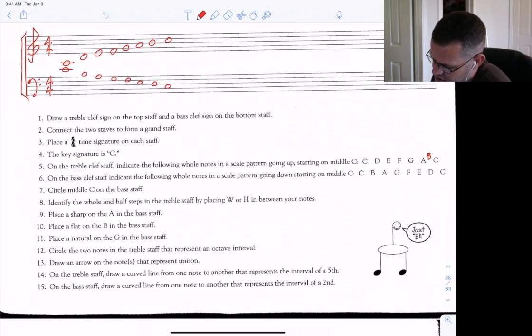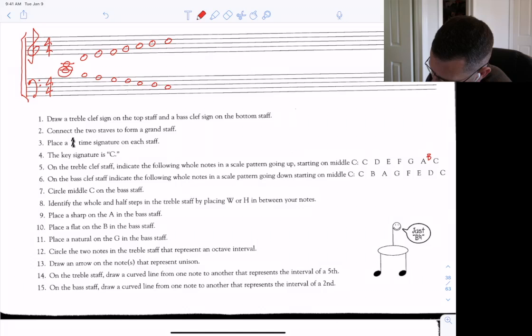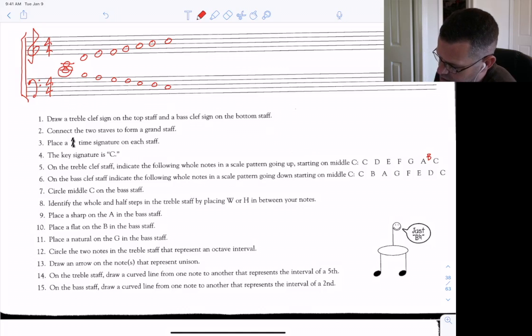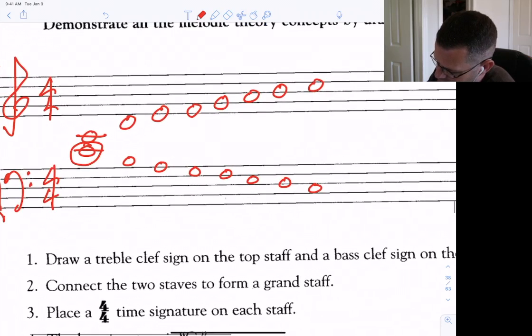Circle middle C on the bass staff. Okay. Identify the whole and half steps in the treble clef by placing W or H in between your notes. Okay. It's a major scale, so it's whole, whole, half, whole, whole, whole, half.